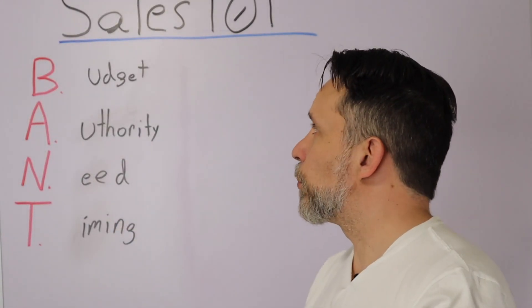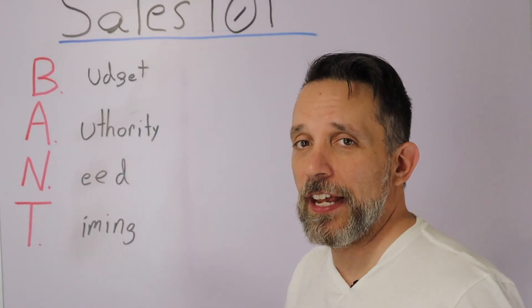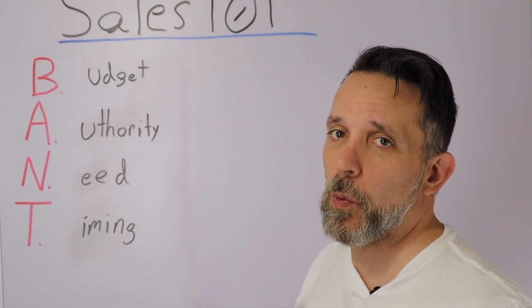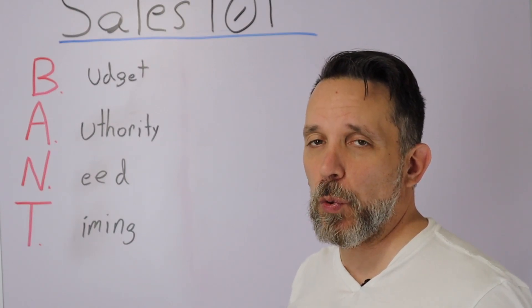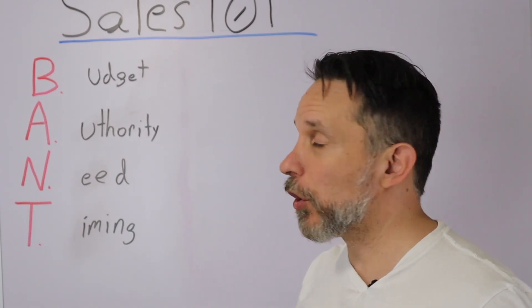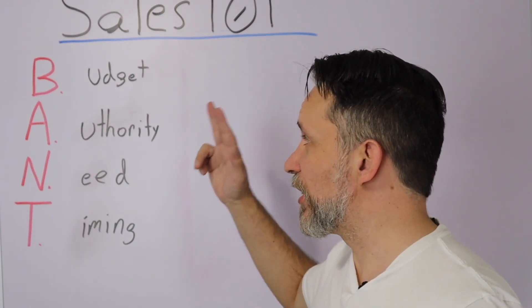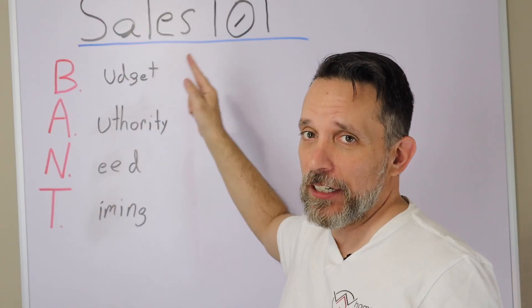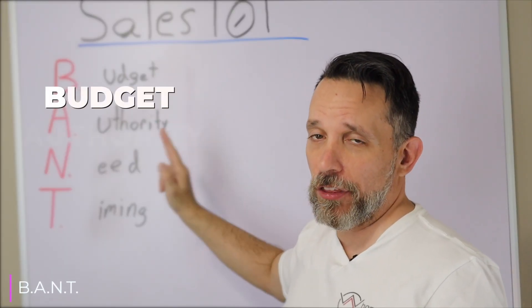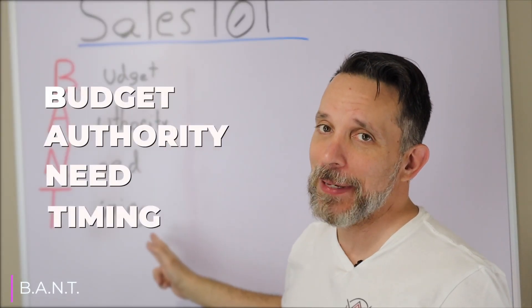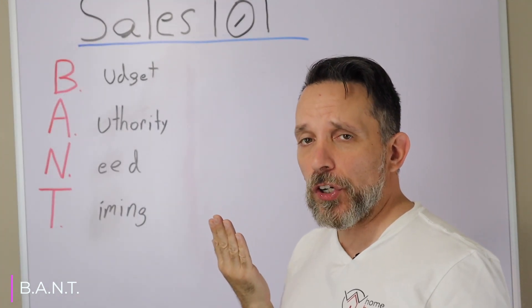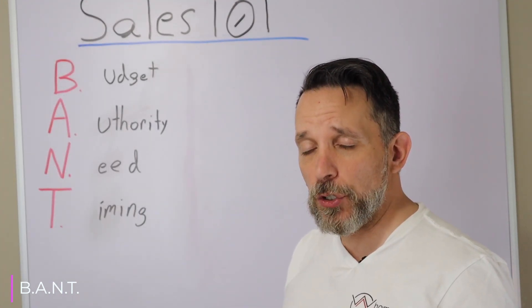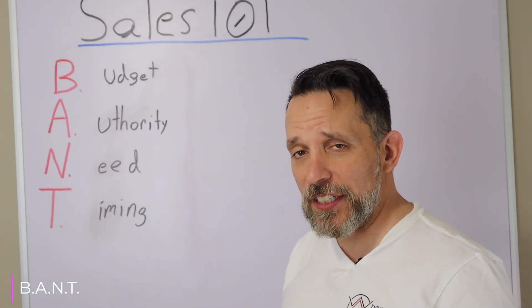What you have right here is one of the most simple things — Sales 101: how I qualify leads. How I was taught to qualify leads in corporate sales. Very simple: BANT. BANT stands for Budget, Authority, Need, Timing. It's very simple and it can work across multiple industries.